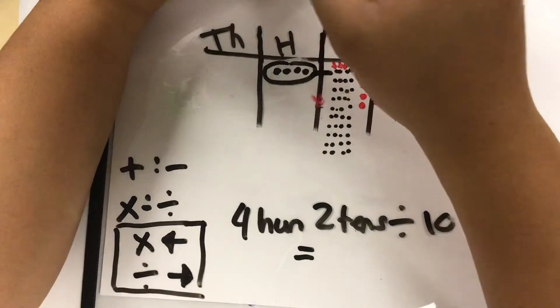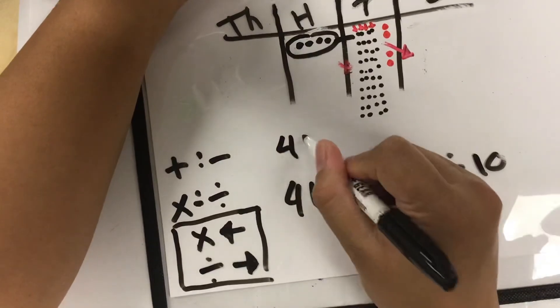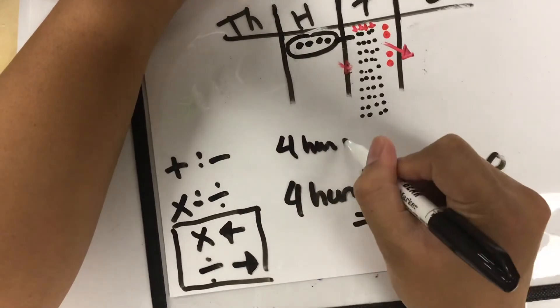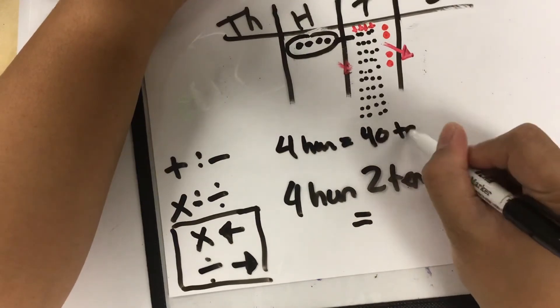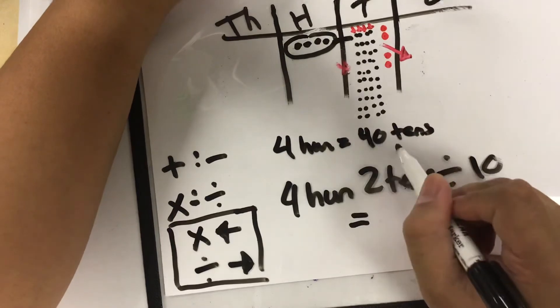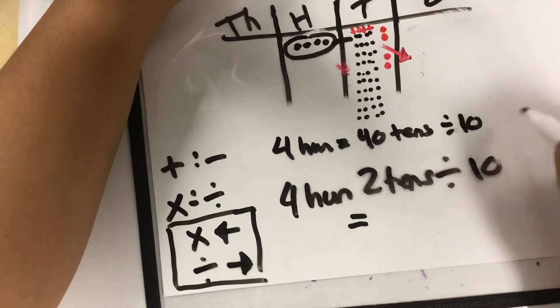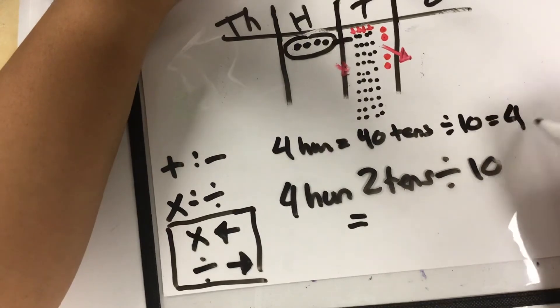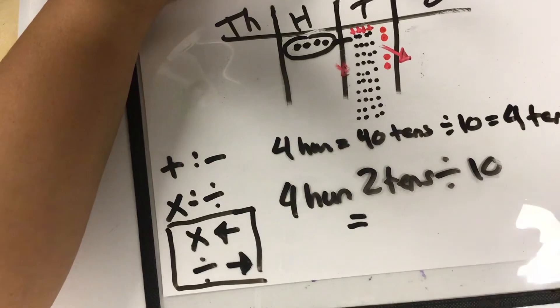So just to show you, four hundreds equals 40 tens. And then when we divide our 40 tens by 10, we end up with four tens.